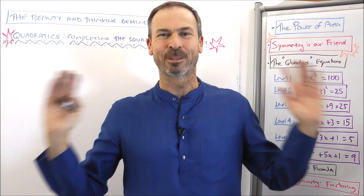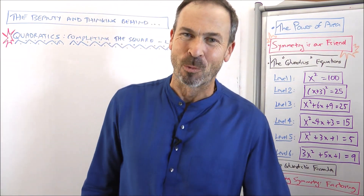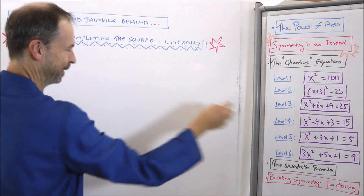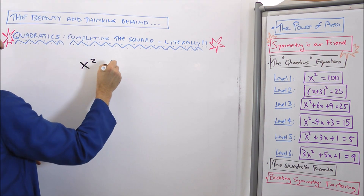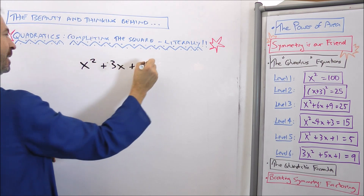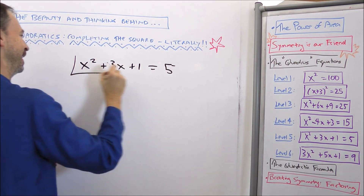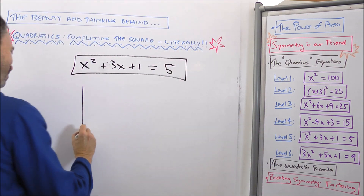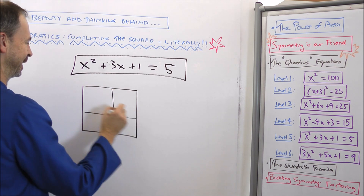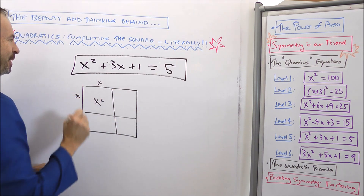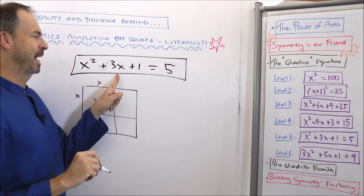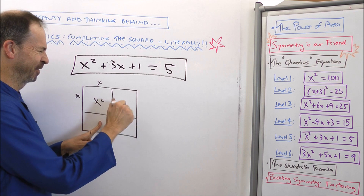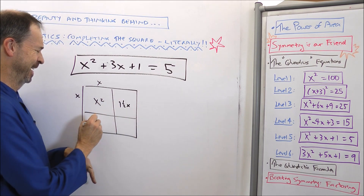We're now ready for level 5. What complication could arise now? Well, let's find out. Let's solve x squared plus 3x plus 1 equals 5. I'll draw the square using the quadris method — the piece that's x squared coming from x times x. And then I've got 3x. I want to be symmetrical, so I'd have to do 1 and a half x and 1 and a half x. I can then do 1 and a half and 1 and a half, and work out this number — what is 1 and a half times 1 and a half? My brain is hurting.